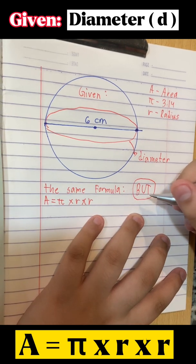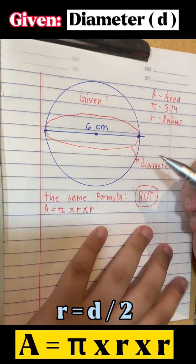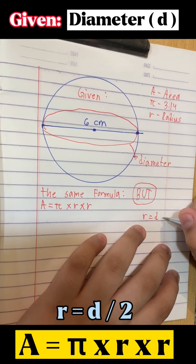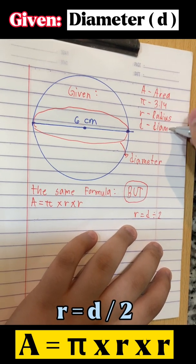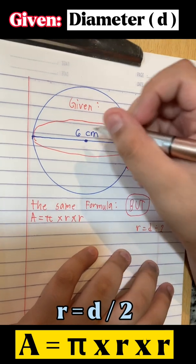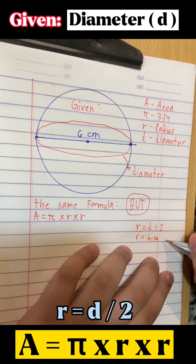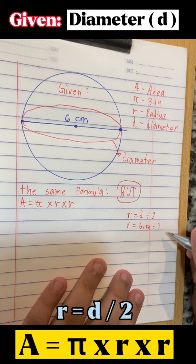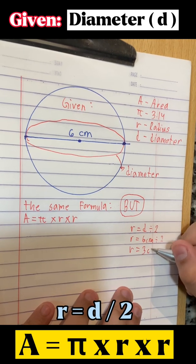But we need to get the radius. To get the radius, we need to divide the diameter by 2. R equals D divided by 2. D is diameter. Now, substitute the value of D to 6 cm. R equals 6 cm divided by 2. Now, divide 6 cm by 2: 3 cm.